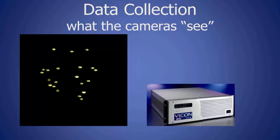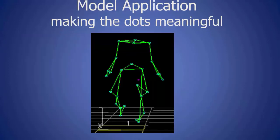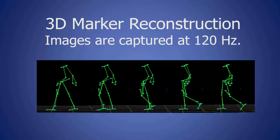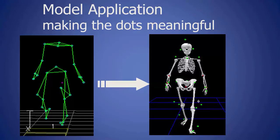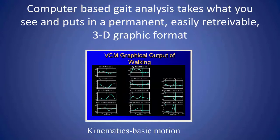This is what the cameras actually see — just the retro-reflective markers — which are used to compute the joint centers, and you can reconstruct stick figures. Images are captured at 120 frames per minute, so these stick figures can be shown in various phases of gait smoothly. You can also get nice skeletons from the stick figures, which are useful for presentations but essentially never used for clinical purposes, unless you want to show the parents what the gait looks like. We get this output of different graphs, which we use to do the gait analysis.